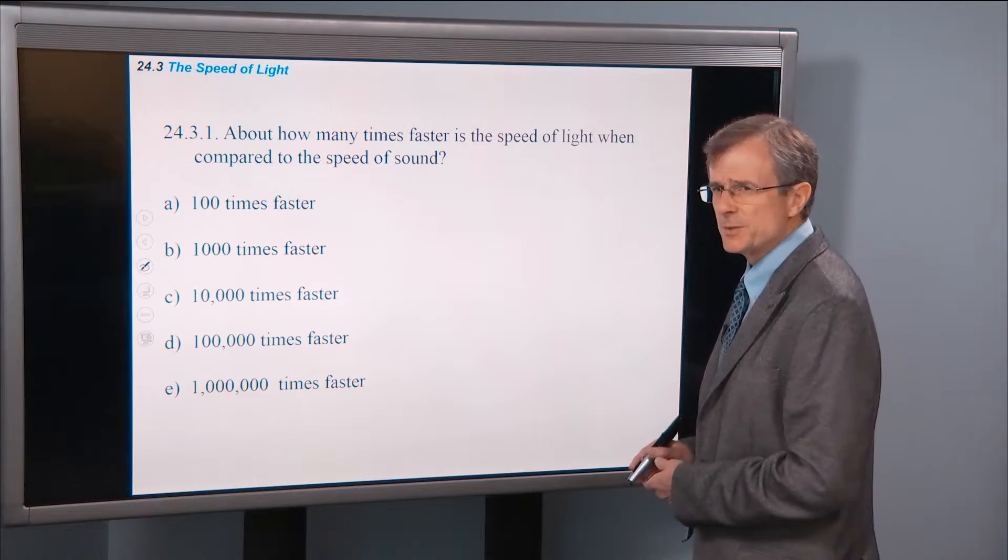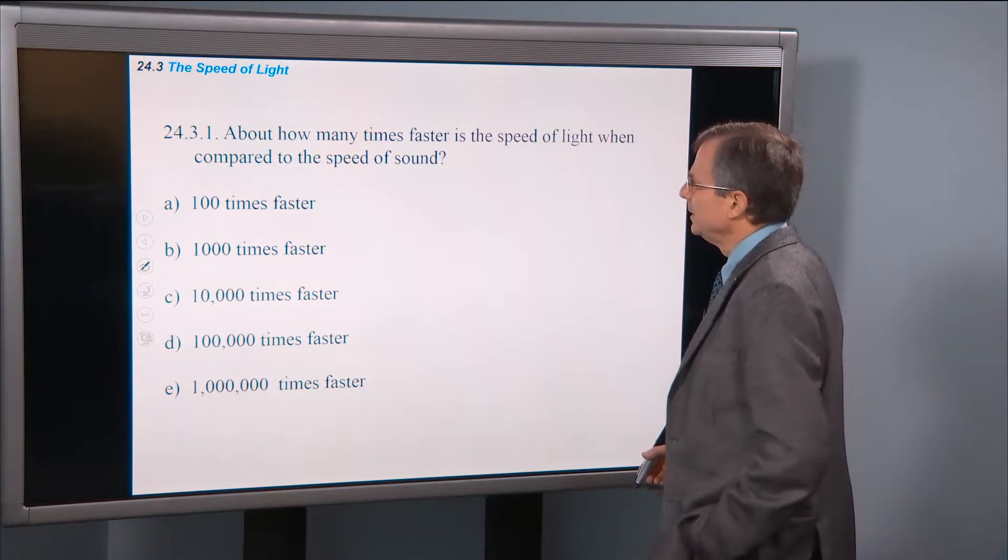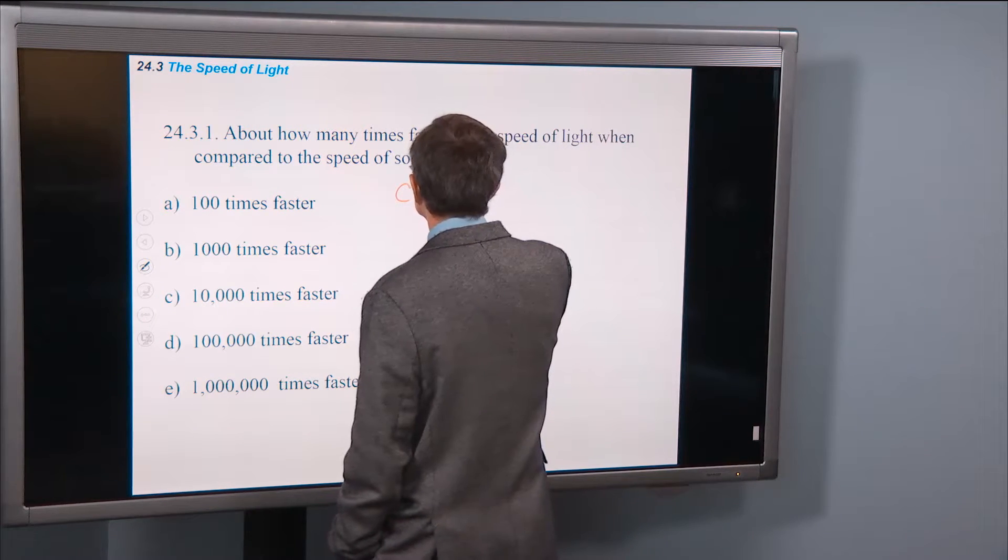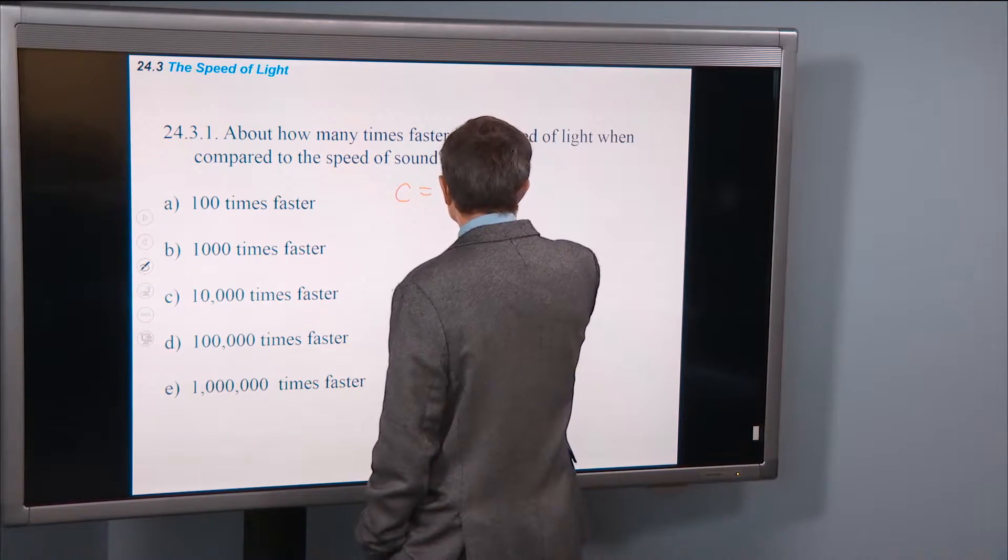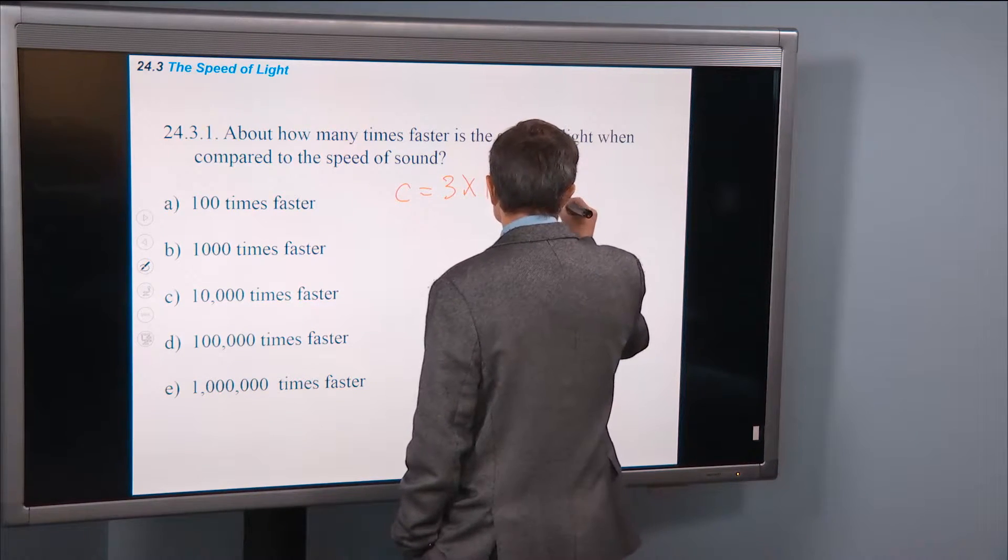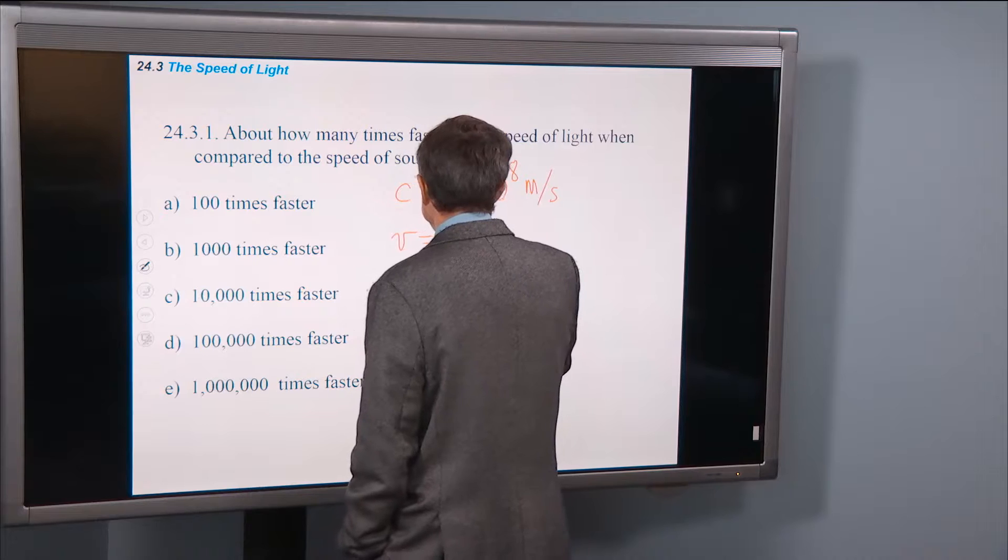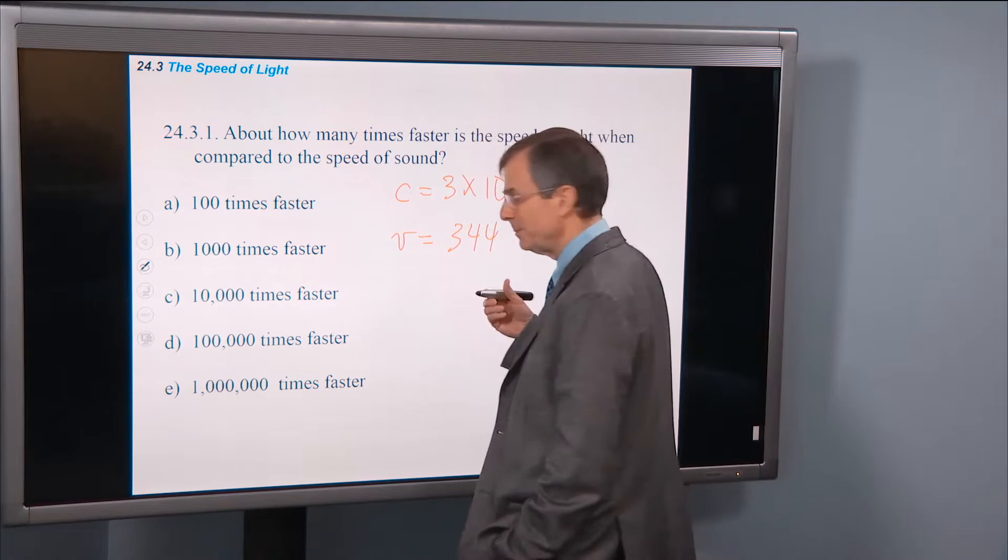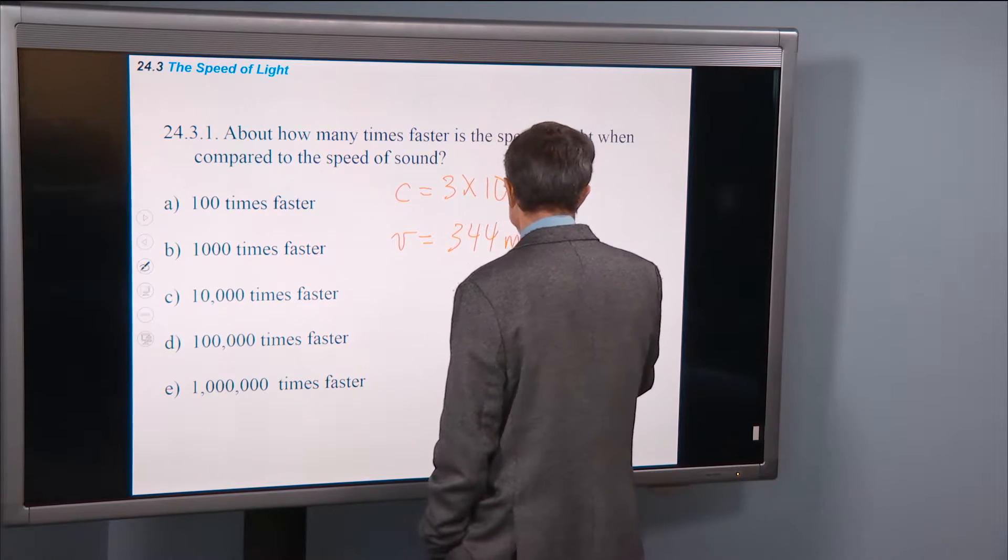About how many times faster is the speed of light when compared to the speed of sound? Well, what's the speed of light? It's 3.00 times 10 to the 8 meters per second. What about sound? About 344, 343, 344, depending on the temperature, humidity, etc. meters per second.